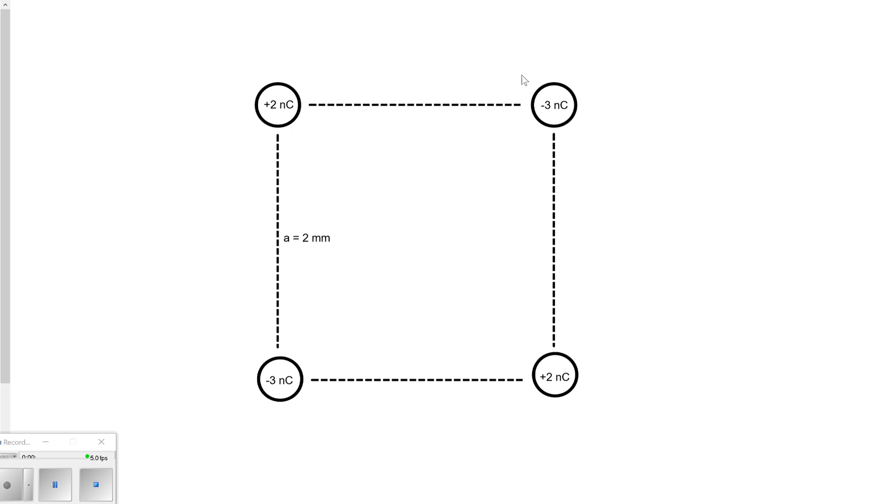So we've got four charges arranged in a square here, and we could have screwed around with it and made the sides different lengths. I wasn't interested in doing that. But let's just say that the problem wants you to find the force on, let's say that this negative three nanocoulomb charge particle up in the corner.